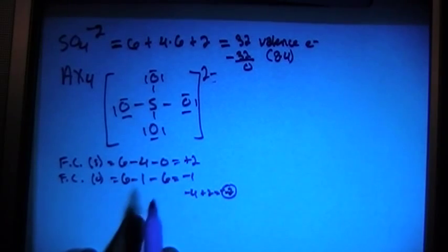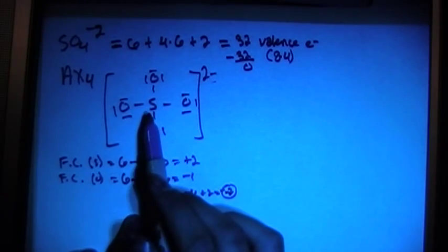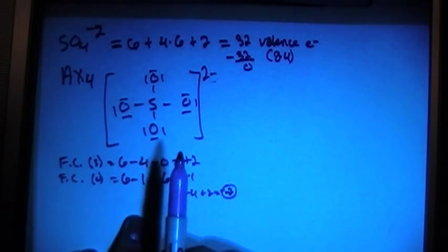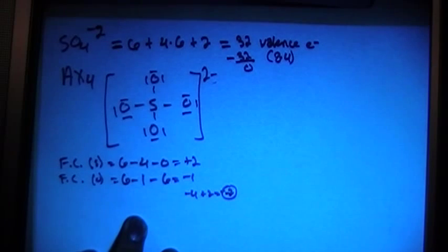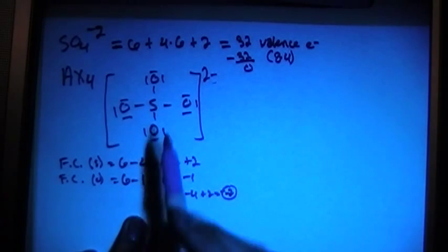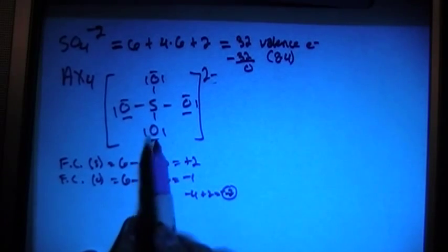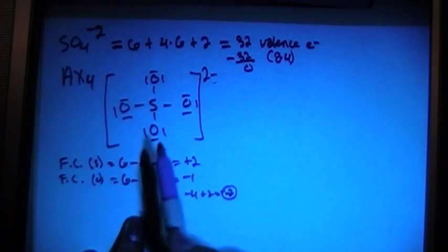But you don't really want a formal charge of plus 2 on one of your atoms within the structure. So what we're going to do, because sulfur being in the third period, it has access to the d orbitals, not just S and P, but the d orbitals as well. So sulfur can actually hold 6 pairs of electrons, not just 4.